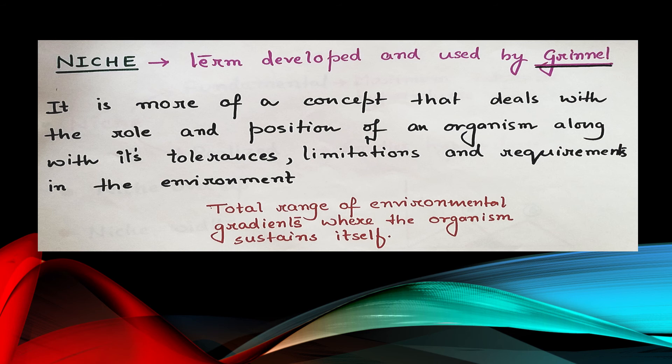Or how is it actually facing struggles? How is it coming out of those struggles? It is overall the job of the organism in that particular habitat. So we can say niche is a total range of environmental gradients where the organism sustains its life.